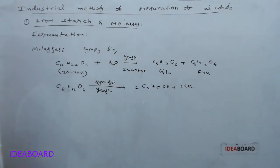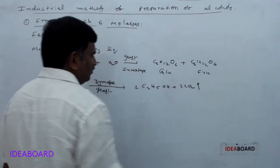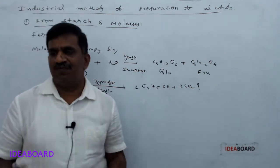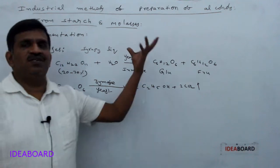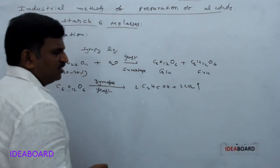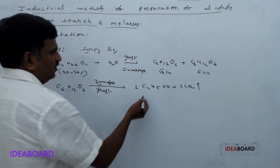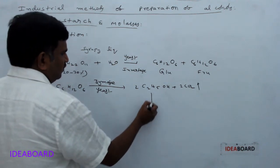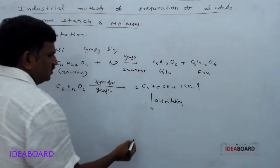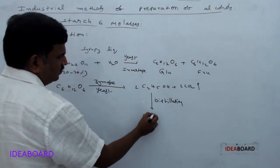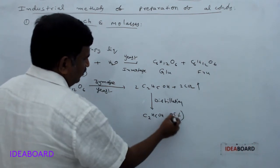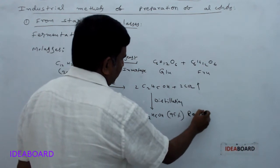Ethyl alcohol and carbon dioxide are formed. When fermentation is completed, CO₂ gas bubbling is observed from the reaction vessel — if CO₂ bubbles are coming out, fermentation is complete. We get only 5 to 10 percent ethyl alcohol. On fractional distillation, we finally get C₂H₅OH at 95 percent, which is called rectified spirit.